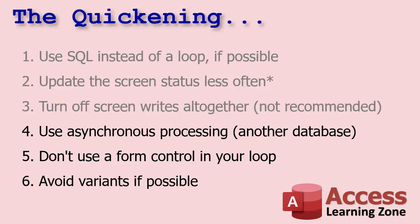You can use asynchronous processing — having two processes run at the same time. For an email batch, instead of having your main database do it while the user waits, you could do it in the background. Access by itself does not support asynchronous processing, but you can shell out to a second database. Make a button that opens another database, and that database can process in the background while your user goes back to work.